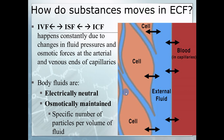Two keys to remember when things are shifting: first, they try to stay electrically neutral. So when a positive moves across the membrane, a negative will go with it, or a positive will go the opposite way to keep it neutral. We'll talk about this more in detail later. The other thing is osmosis — water likes to distribute evenly across the different compartments, so it's always trying to hit equilibrium.